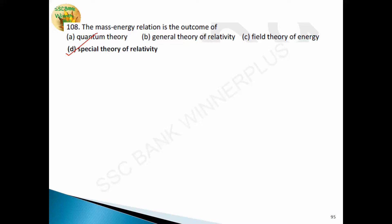Einstein's special theory of relativity was published first, followed by the general theory of relativity in 1915. In the special theory of relativity: first, the speed of light is constant for all observers; second, observers moving at constant speed should be subject to the same physical laws. The mass-energy relation E=mc² is an outcome of the special theory of relativity.